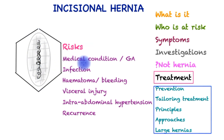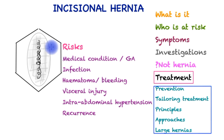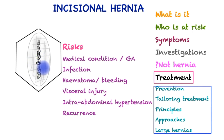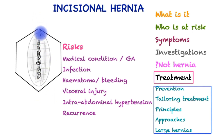Risks include complications from the patient's pre-existing medical conditions or from the anesthetic. Surgeons must take every precaution to prevent infection, as this increases recurrence risk. Rarely, hematoma or bleeding may occur at dissection sites. If bowel is adherent, previous mesh is present, or adhesions exist from prior surgery, there is a risk of visceral injury to bowel or bladder. If large amounts of abdominal contents must be reduced and the abdomen closed forcibly, intra-abdominal pressure may rise unacceptably, impairing breathing or venous return to the heart.